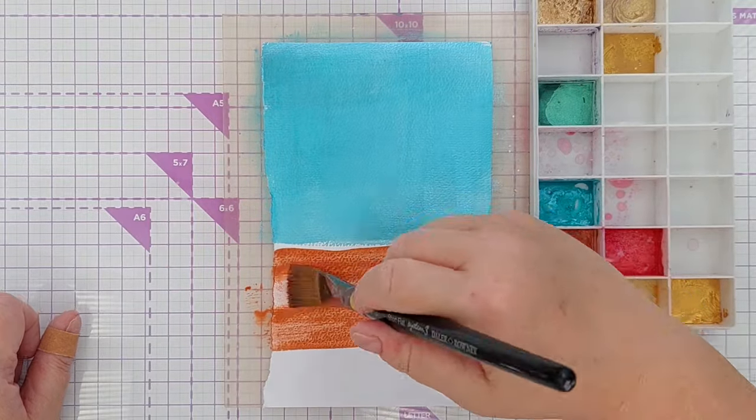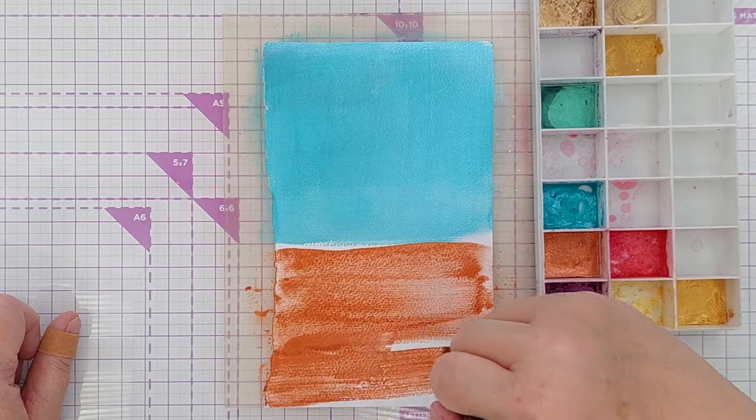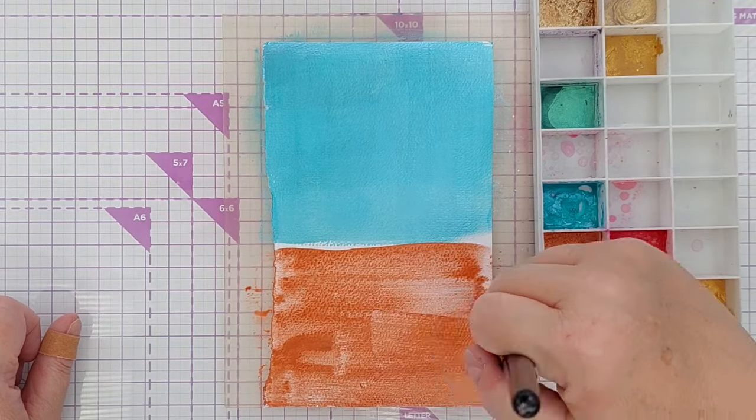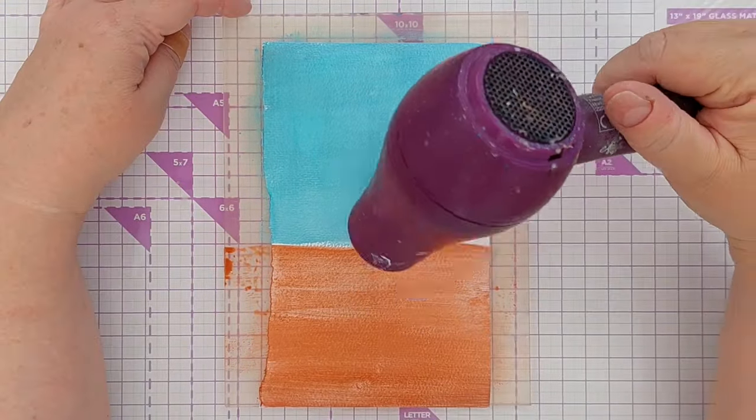So I painted half my card in teal and half my card in copper and then I dried it with my hair dryer and then cut my piece of card into smaller pieces so that I could die cut from it.